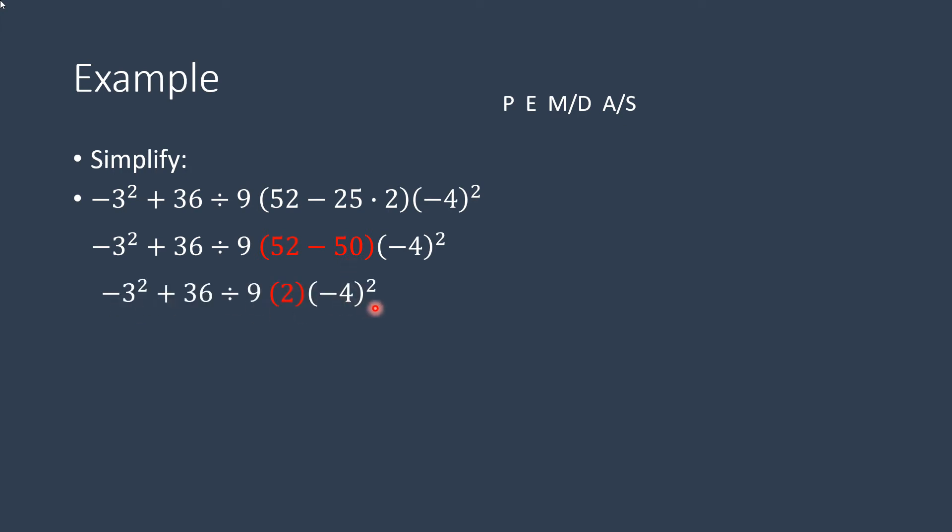Next, we're going to do the exponents. This negative 3 squared, but here you'd only square the 3, so it'd be 9, and a negative comes out front, so it'd be negative 9. Here you can do this negative 4 parentheses squared at the same time, which is 16. We did all the exponents.